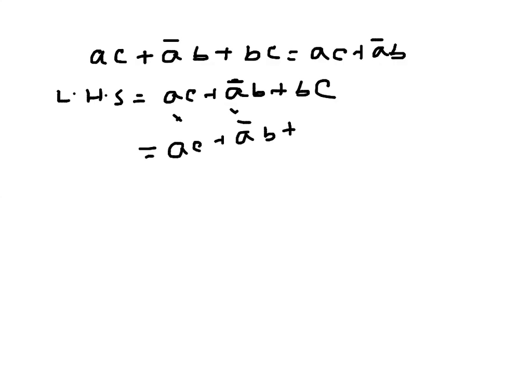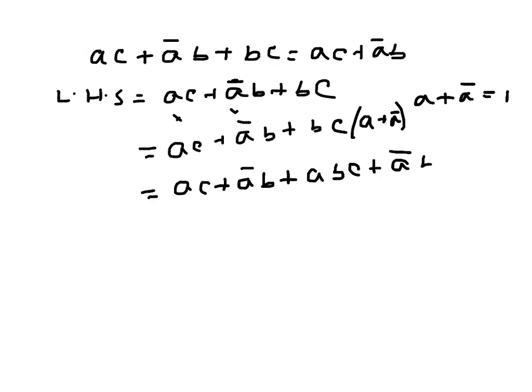Since I know A plus A̅ is 1, I will just multiply this one with A plus A̅ and see what happens. This is becoming ABC, this is becoming A̅BC.